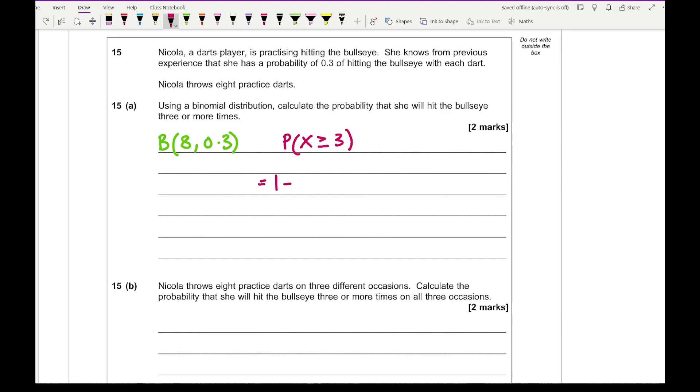This is going to equal 1 minus the probability of x less than or equal to 2. On my Casio calculator, I go to menu, distribution, binomial CD, then variable. The parameters are x equals 2, n equals 8, p equals 0.3. Entering that gives 0.55177 to five decimal places, and we take that away from 1, giving a final answer of 0.44823 to five decimal places.